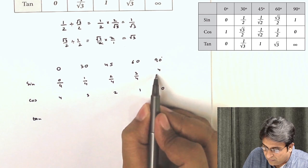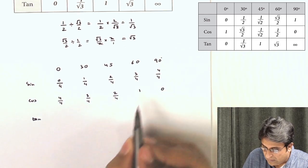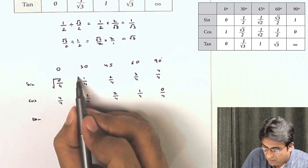Now divide each value by 4, so all these values we divide by 4, and take the square root of all these values.